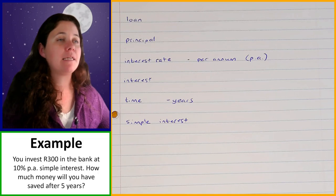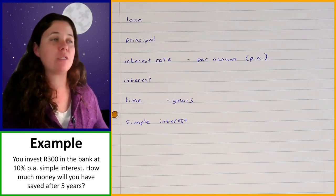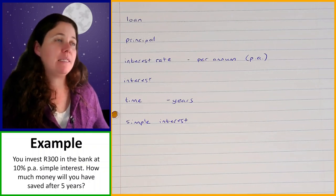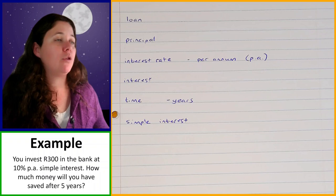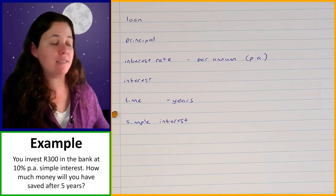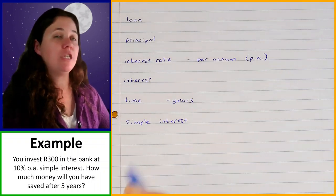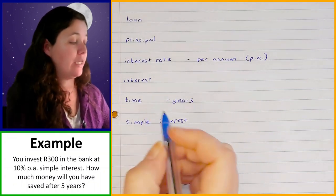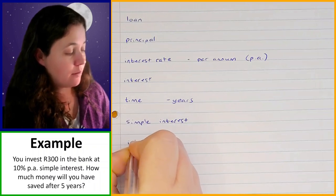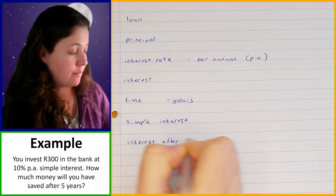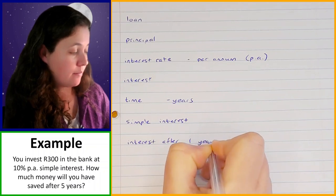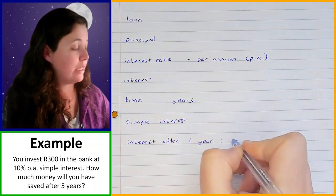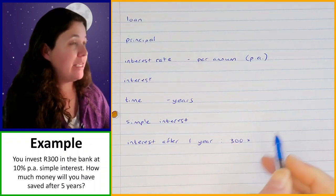Let's have a look at an example where we're actually going to be working out something with interest. You invest 300 rand in the bank at 10% per annum simple interest. How much money will you have saved after five years? The first thing we need to do is work out how much interest you will earn after one year. We're going to take the principal amount, which is the 300 rand, and multiply it by the interest rate.